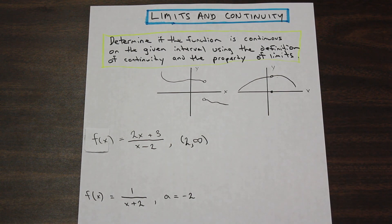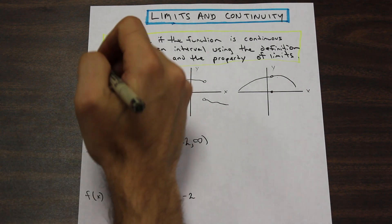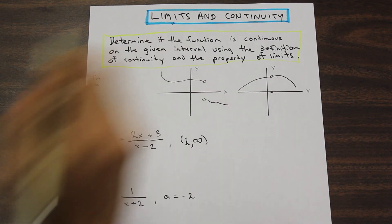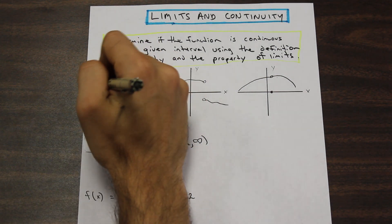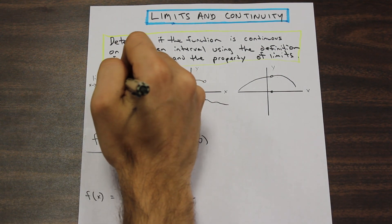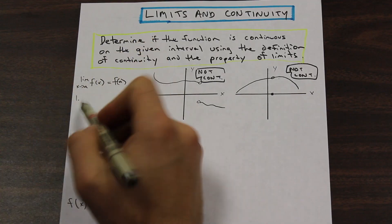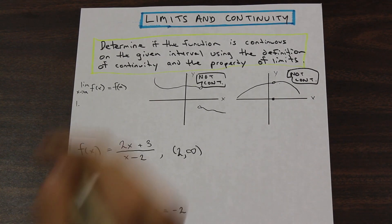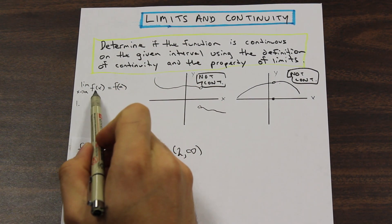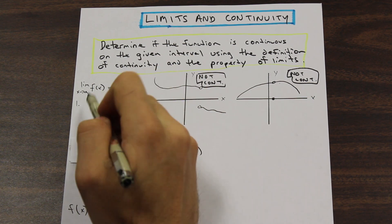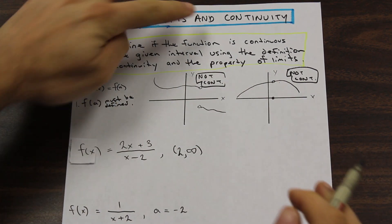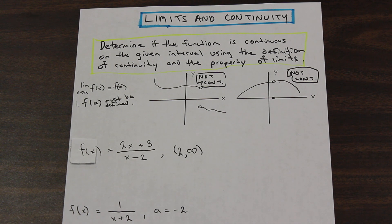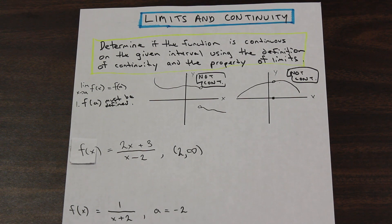That brings me to the definition of what a continuous function is. There are a couple of rules. A function f is continuous at a number a if the limit as x approaches a of f(x) equals f(a). The first rule is that f(a) must be defined — so if we put a into our function, we must have a defined output. If you're not comfortable with that, go back to our video on range and domain and inverse of functions.